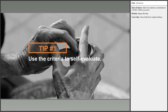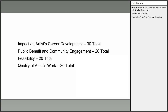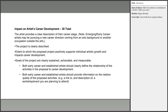My first tip for writing a strong application is to use the criteria to self-evaluate. The evaluation criteria can be found in the guidelines — we'll go over them in depth here. Panelists are trained to evaluate your project against these criteria. Read through them before you start your application and again before you submit, comparing them to your application to make sure you're providing exactly what the panel will be looking for.